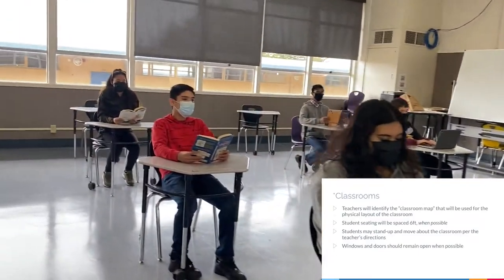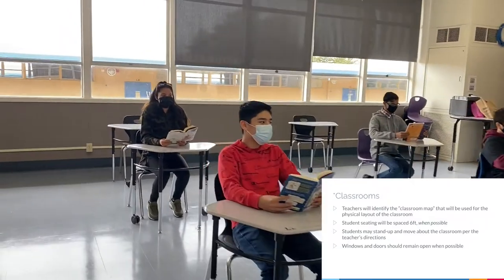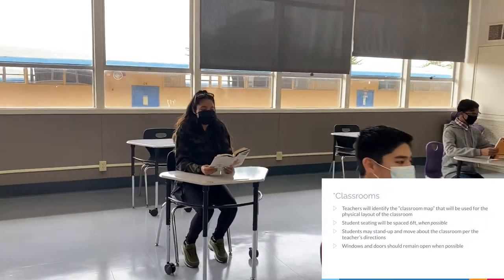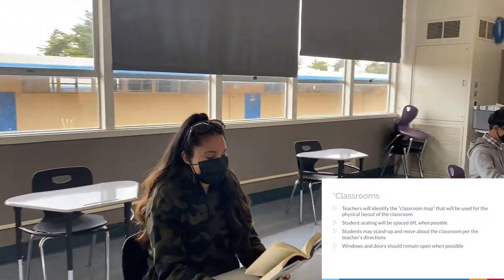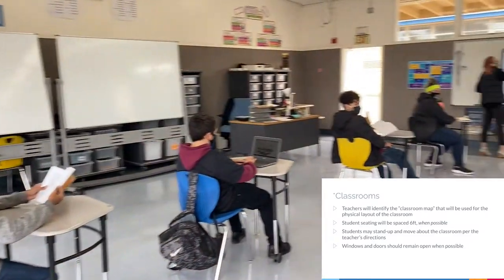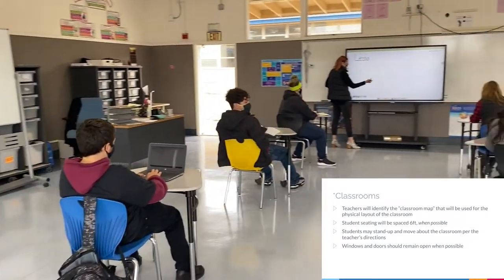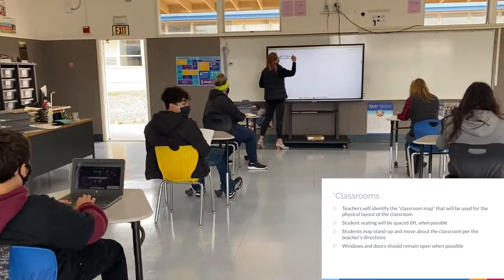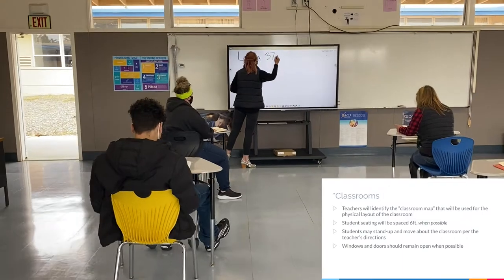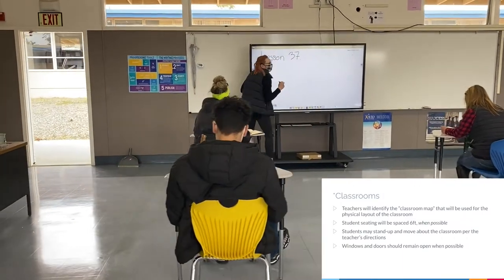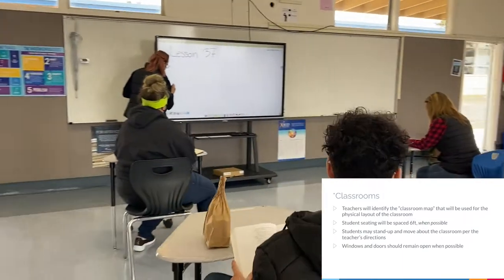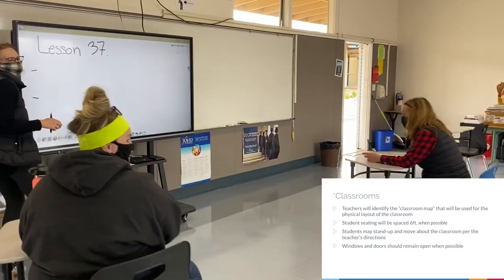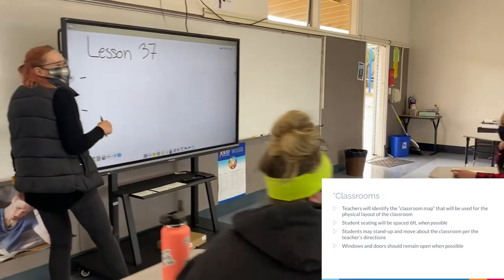Teachers will identify the classroom map that will be used for the physical layout of their classroom. Student seating will be spaced six feet when possible. Students may stand up and move about the classroom per the teacher's directions. Windows and doors should remain open when possible, so make sure to bring an extra jacket.